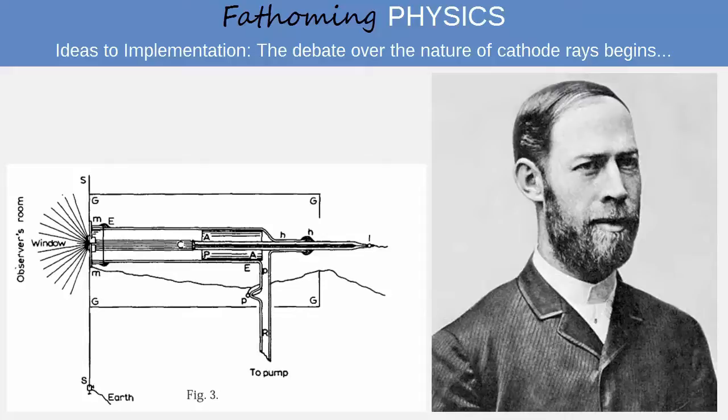Later, Hertz investigated the penetration of cathode rays through thin metal foils, finding that cathode rays could penetrate some types of metals. He argued that if cathode rays were particles, they would be too big to pass through the metal foils in the experiment.